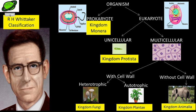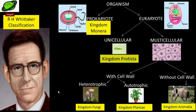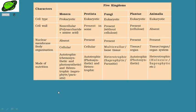Overall, R.H. Whittaker gave five main kingdoms: 1. Kingdom Monera, 2. Kingdom Protista, 3. Kingdom Fungi, 4. Kingdom Plantae, and 5. Kingdom Animalia. Now let us understand these in more detail.